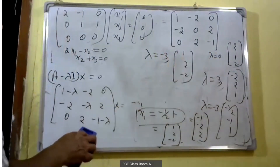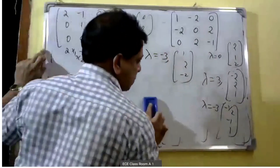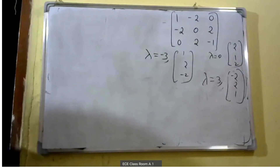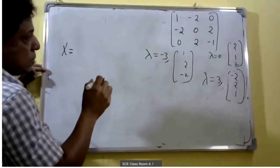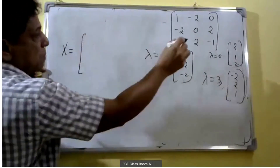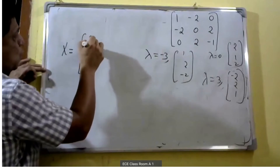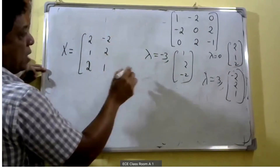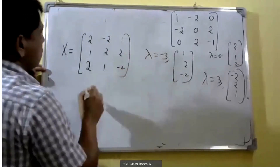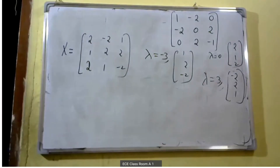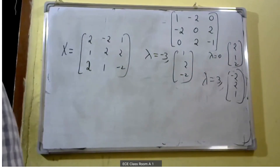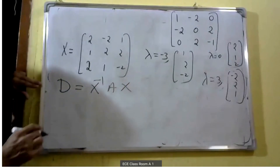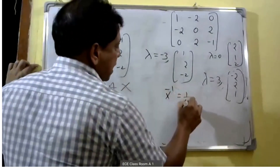Then we can form the modal matrix, known as X. The modal matrix X is formed by placing the eigenvectors as columns. Therefore X equals [2, -2, 1; 1, 2, 2; 2, 1, -2]. To find the diagonal matrix D, we use D equals X inverse times A times X. X inverse equals 1 over determinant of X times adjoint of X.